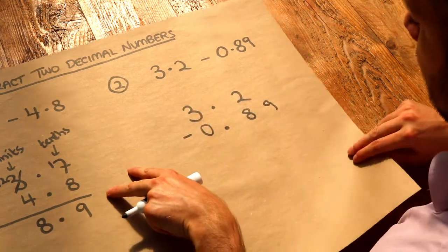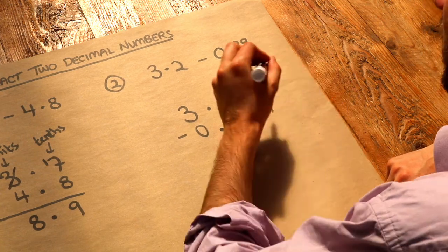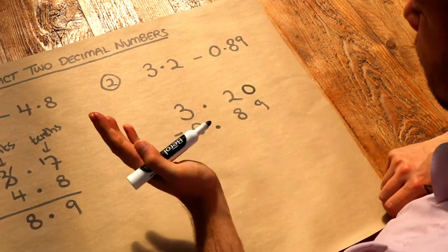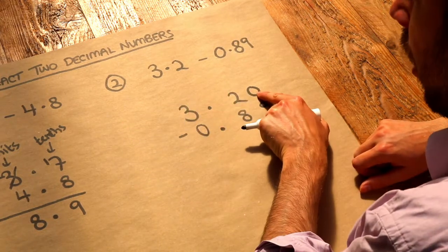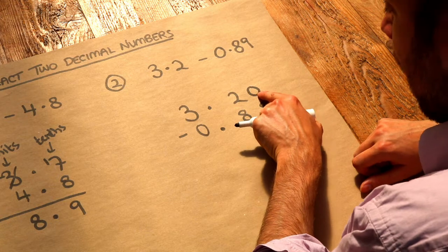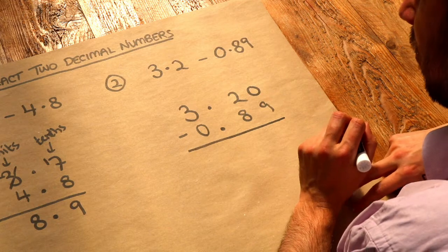The only reason this is slightly more difficult is that we've got a blank here. If we've got a blank, we can just fill it in with a 0 because that doesn't change the number. We're just saying that 3.2 has 0 hundredths. So if you've got any blank space, you can just fill it in with a 0, and now we can do exactly what we did before.